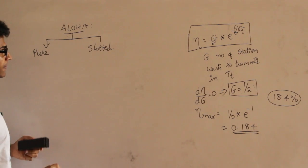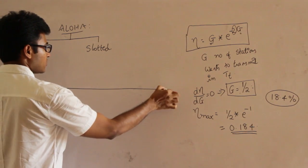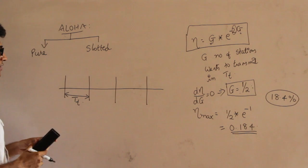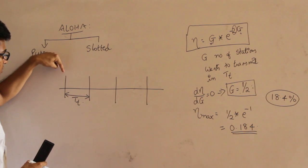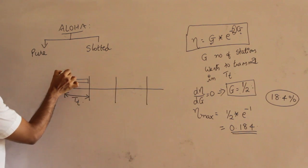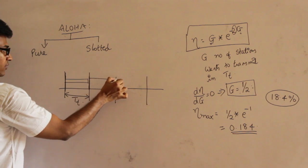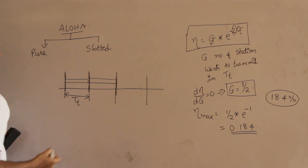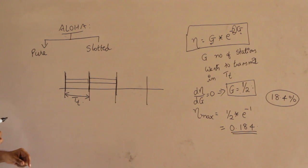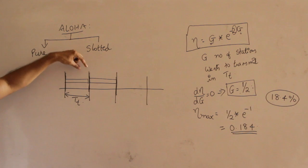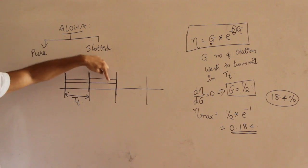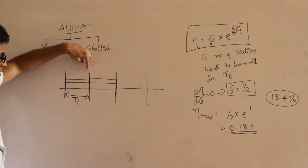Coming to Slotted Aloha, the main difference from Pure Aloha is that time is divided into slots, and each slot is 1TT long. Every station is forced to start transmitting only at the beginning of a time slot. If you miss one slot boundary, you must wait for the next one. So no station is supposed to start sending data in the middle of a slot.